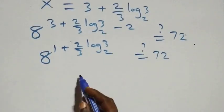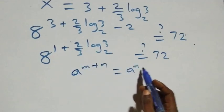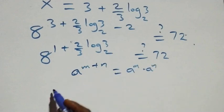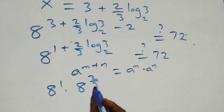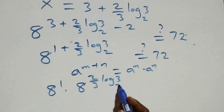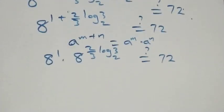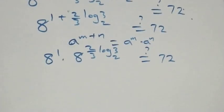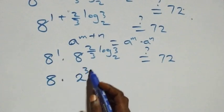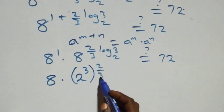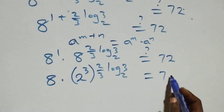Separating by the law of indices — 8 raised to power n plus n equals 8 raised to power n times 8 raised to power n — this becomes 8 raised to power 1 times 8 raised to power (2 over 3 log base 2 of 3) equals 72. Expressing 8 as 2 raised to power 3, raised to power 2 over 3 log base 2 of 3, the powers multiply and 3 cancels: we get 8 times 2 raised to power 2 log base 2 of 3 equals 72.